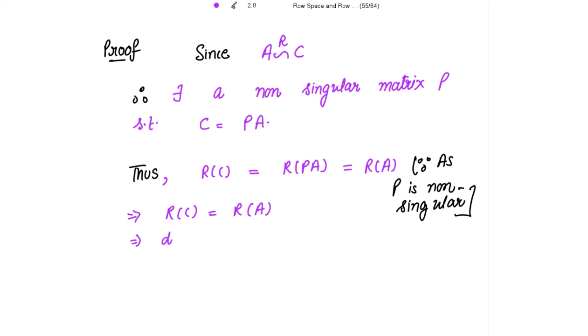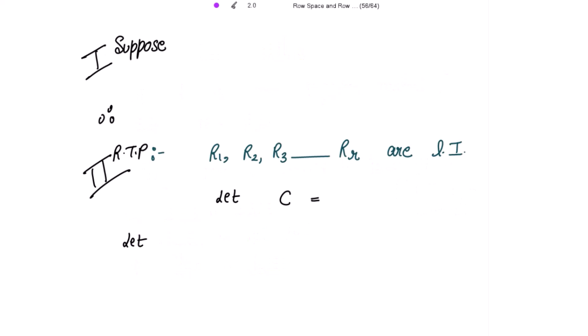This implies the dimension of the row space of C equals the dimension of the row space of A, which means the row rank of C equals the row rank of A. We have to show that the row rank of A equals the number of non-zero rows of C. Suppose that C consists of R non-zero rows.